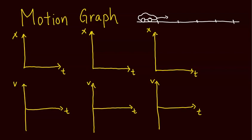Let's start with a toy car moving towards the right — moving in the positive direction — at constant velocity, same speed and same direction. On the position-time graph, the vertical axis is position (the location of the car) and the horizontal axis is time. Because it travels the same distance each second at constant speed, we get a straight line with a positive slope.